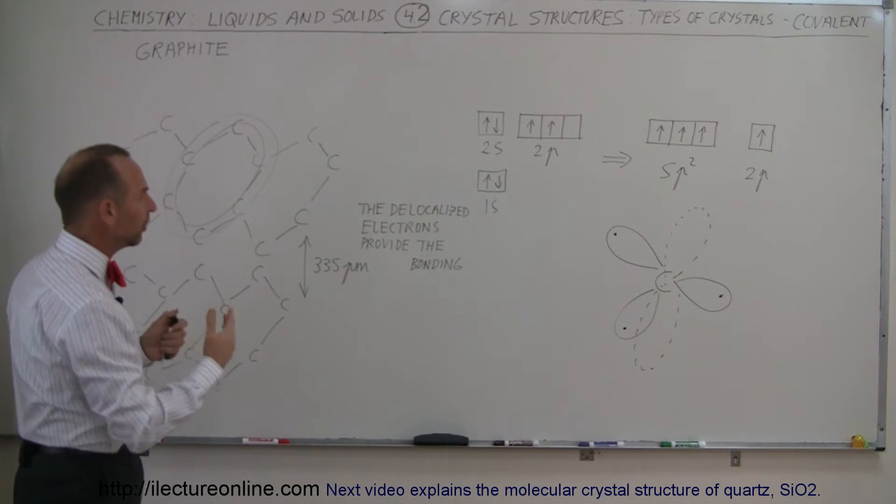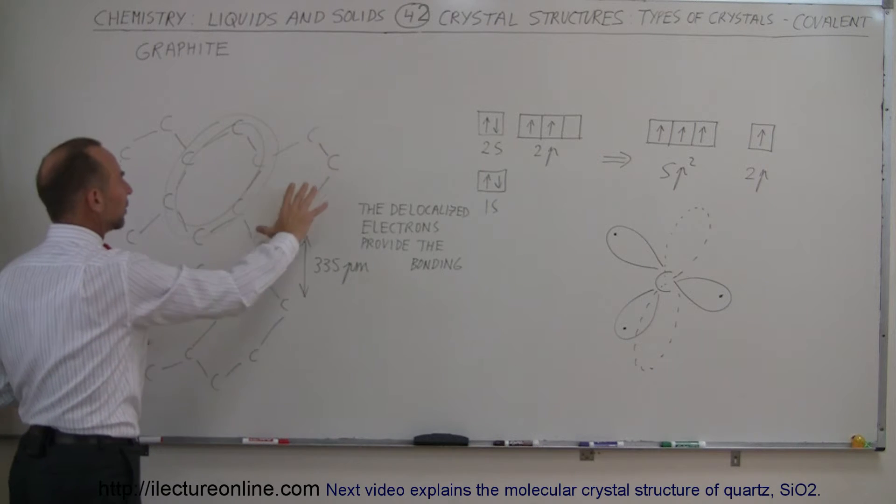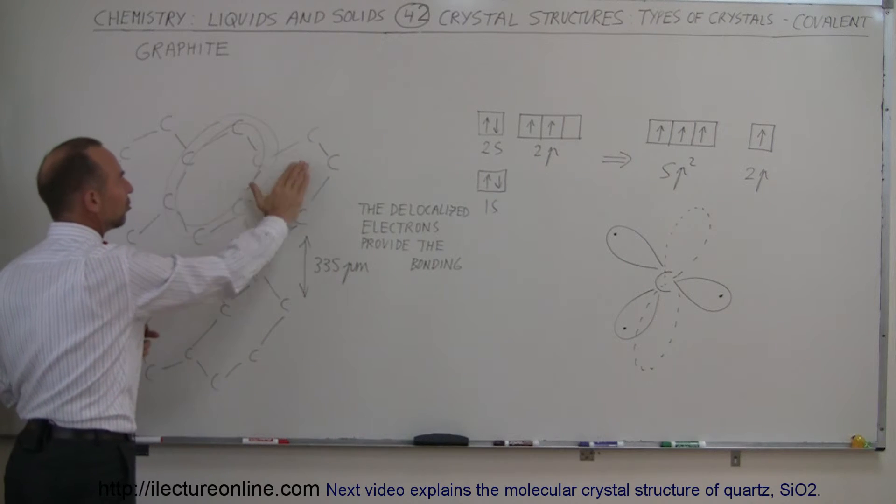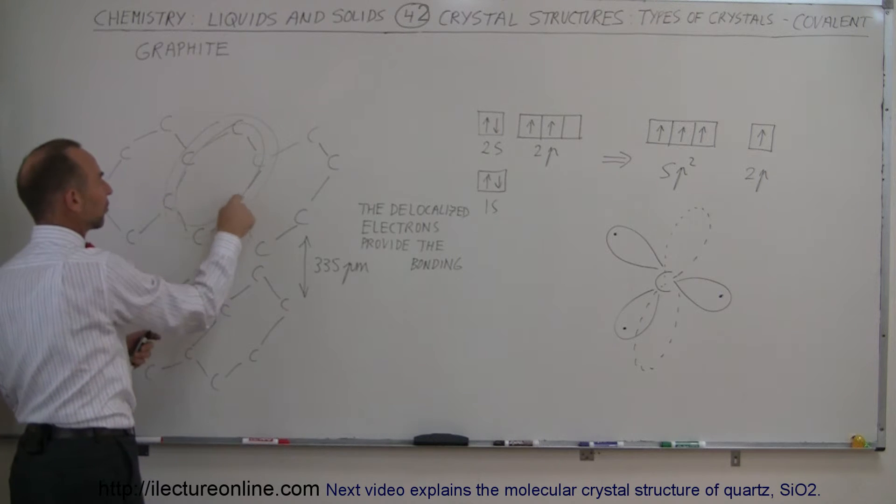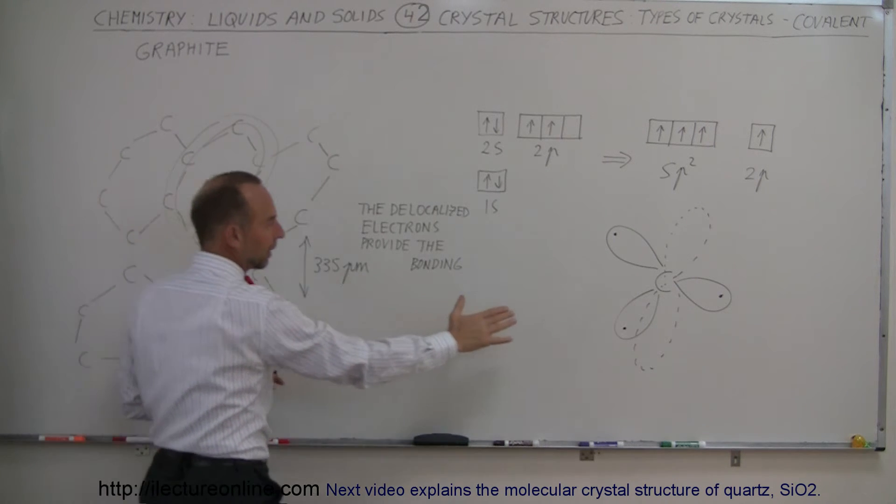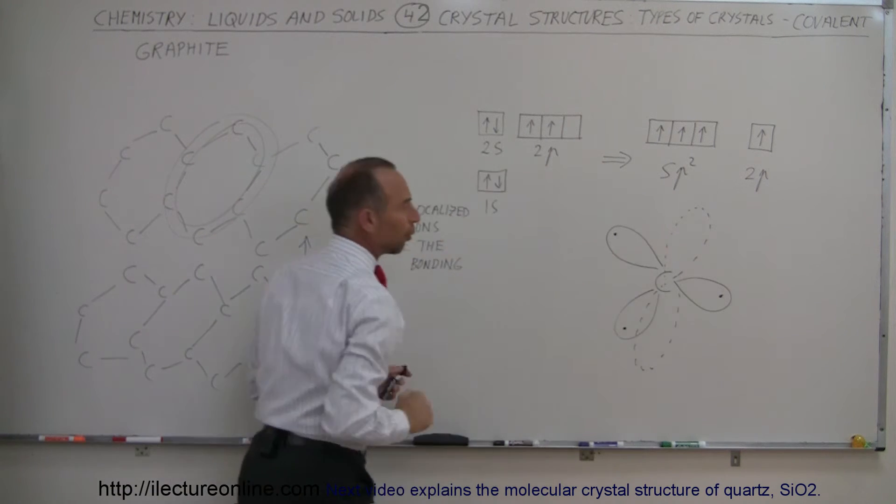If you only have carbon then of course carbon will continue to bond to carbon with these sheets where every carbon as you can see has three of these bonds that come from these three hybridized orbitals.